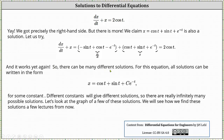So there can be many different solutions. For this equation, all solutions can be written in the form x equals cosine t plus sine t plus c times e to the power of negative t, where c is some constant. Different constants will give different solutions, so there are really infinitely many possible solutions. Let's look at a graph of a few of these solutions. We will see how to find these solutions a few lectures from now.